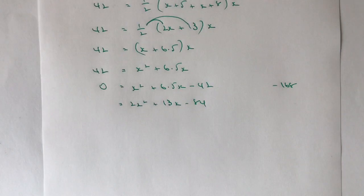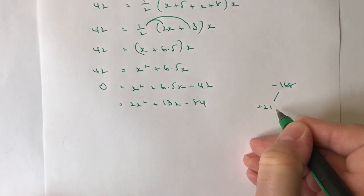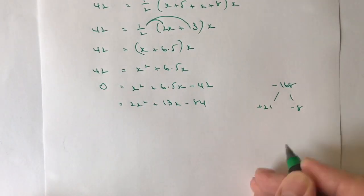And what I'm looking for is two numbers that when I multiply them together make 168. And when I add them together will give me plus 13. Now, it's a little bit of trial and error on this, but it is a number that you can work with. And what hopefully you should end up with is plus 21 and minus 8.